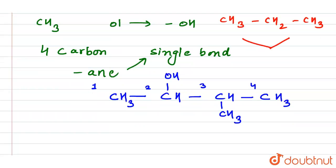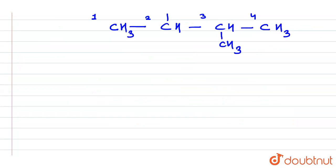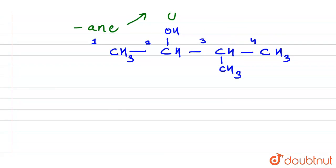So if we draw the structure for this, the structure is like this. Here we have one, two, three, and four. At the third position, methyl group just like this represents OH. So this is the bond line structure for the given compound, and this is our answer.